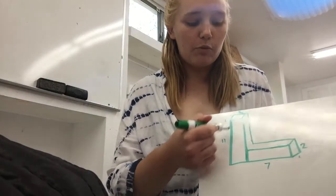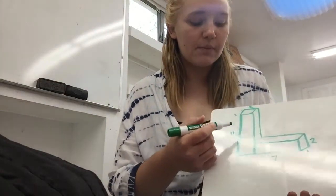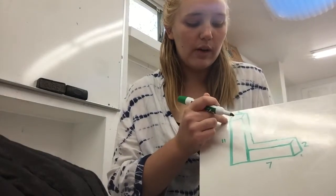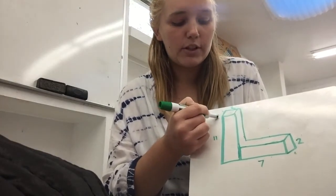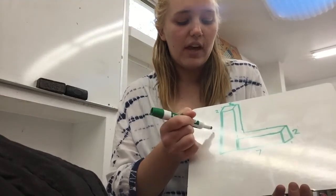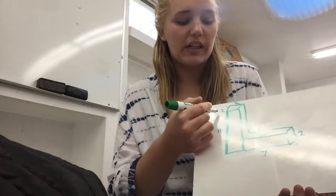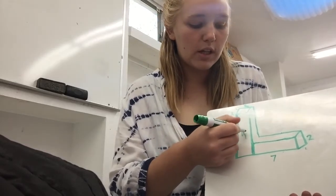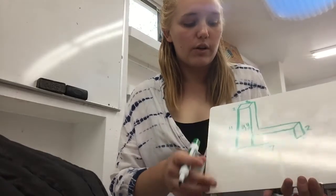First we need to find the volume of the first rectangular prism. So 11 times 2, and then I need to put another 2 here because that's the width. So 11 times 2 is 22, times 2 is 44. I'm just going to write 44 here so don't forget.